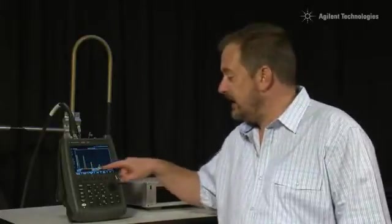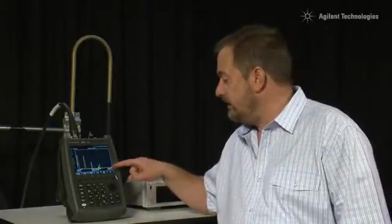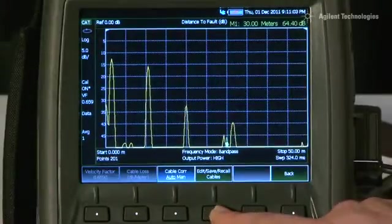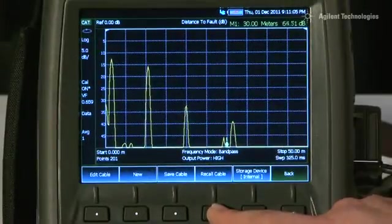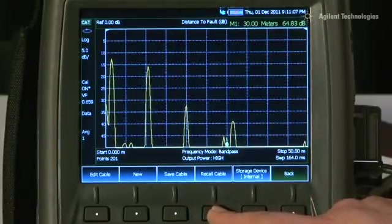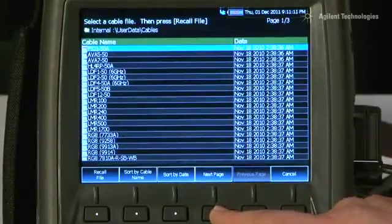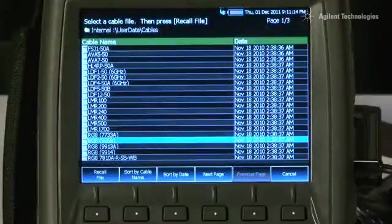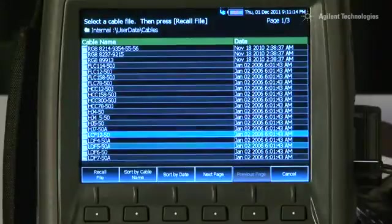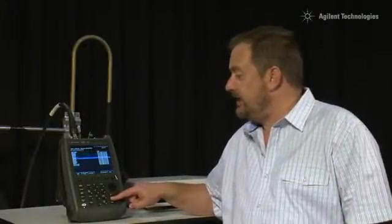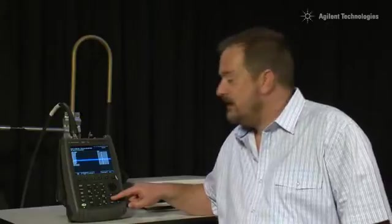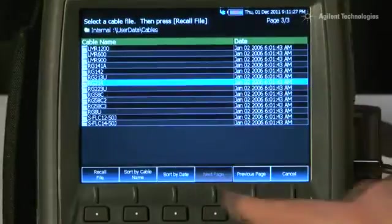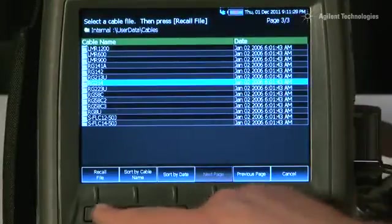To make sure we have got the distance scale set up correctly for this type of cable, I am going to press Measure Setup and press DTF Cable Specifications and we will recall a cable type. You can see here all of the common RF cables and microwave cables are already stored inside the FieldFox. If there is a cable you are using that is not stored inside, you can simply enter the values of Velocity Factor and Attenuation yourself. This is RG214, so I will select RG214 and select Recall File.